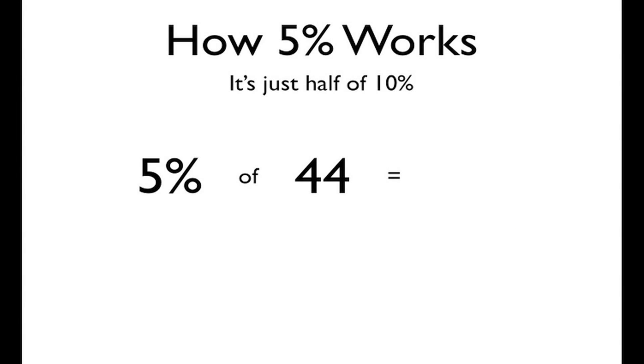We're going to look at it in this example. 5% of 44. Well, we're going to start off this time by dividing by two. So 44 divided by two gives us 22. Then we take 10%. Well, move the decimal place over one gives us 2.2. That's all there is to it. It's really easy.